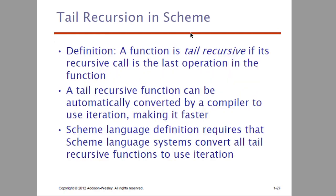Next we have tail recursion in Scheme. A tail recursive function is one where the recursive call is the last operation of the function. For example, finding the factorial of n: 5 factorial equals 5 × 4 × 3 × 2 × 1. Every time we reduce the number by 1, and the last statement in the function is the recursive call, hence we say it is tail recursive.